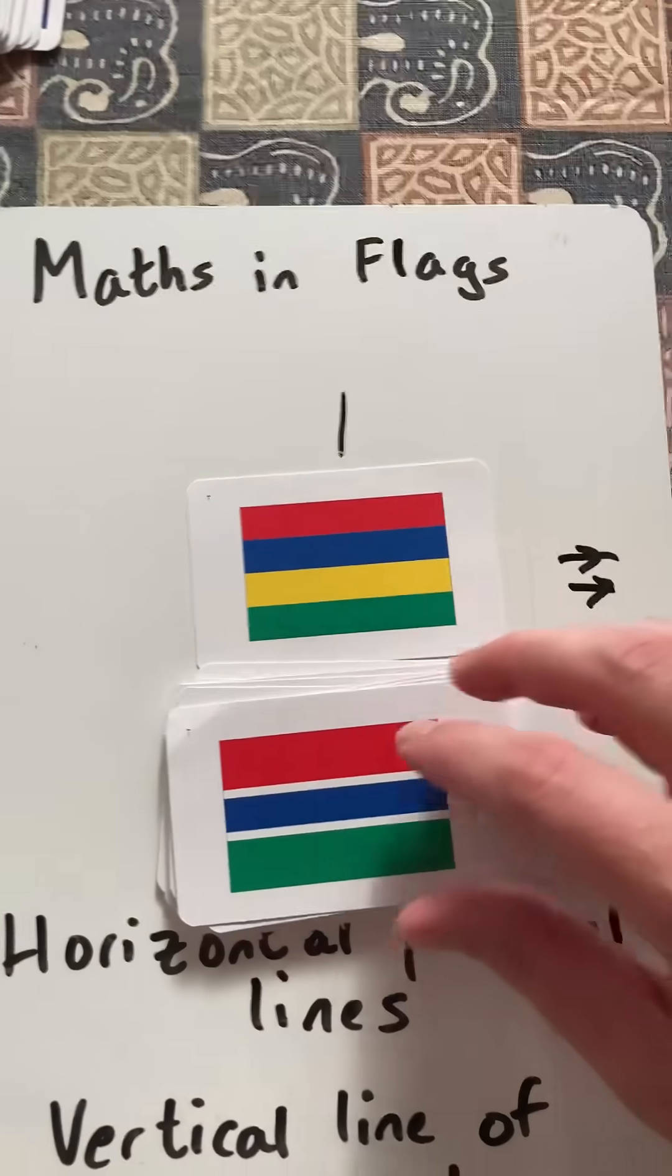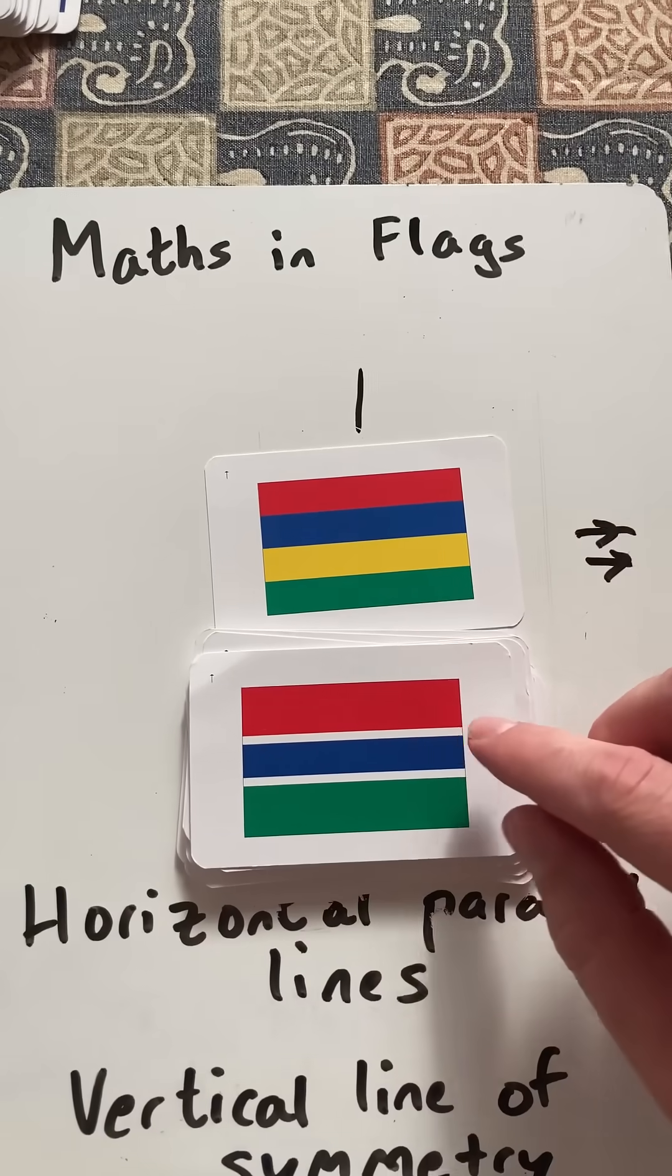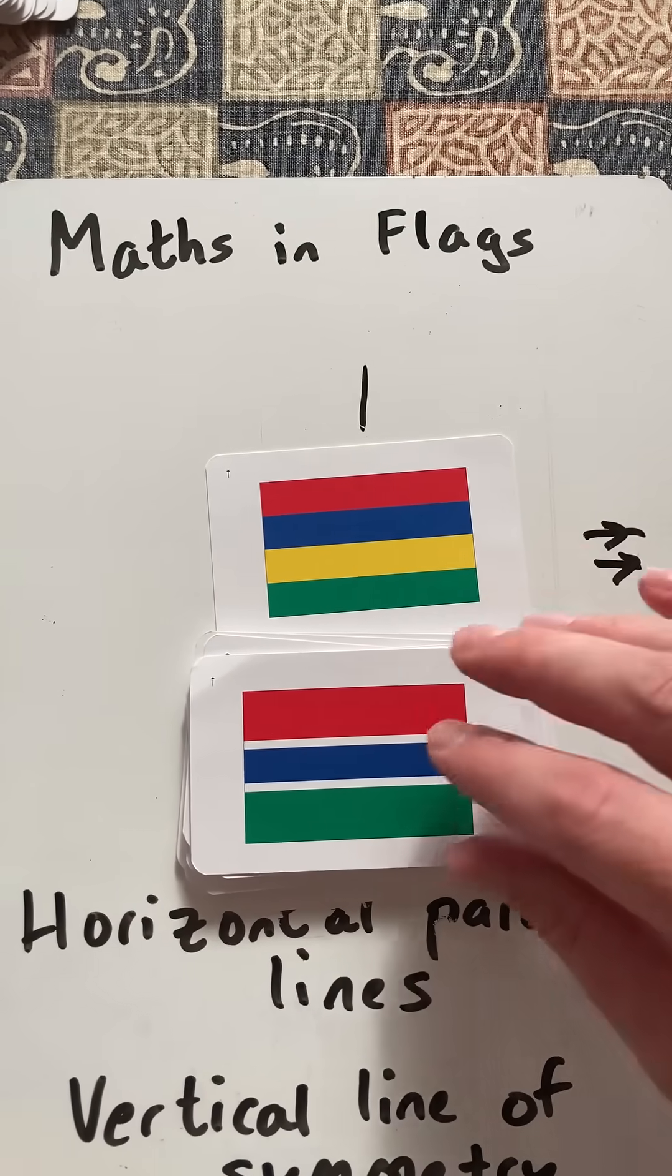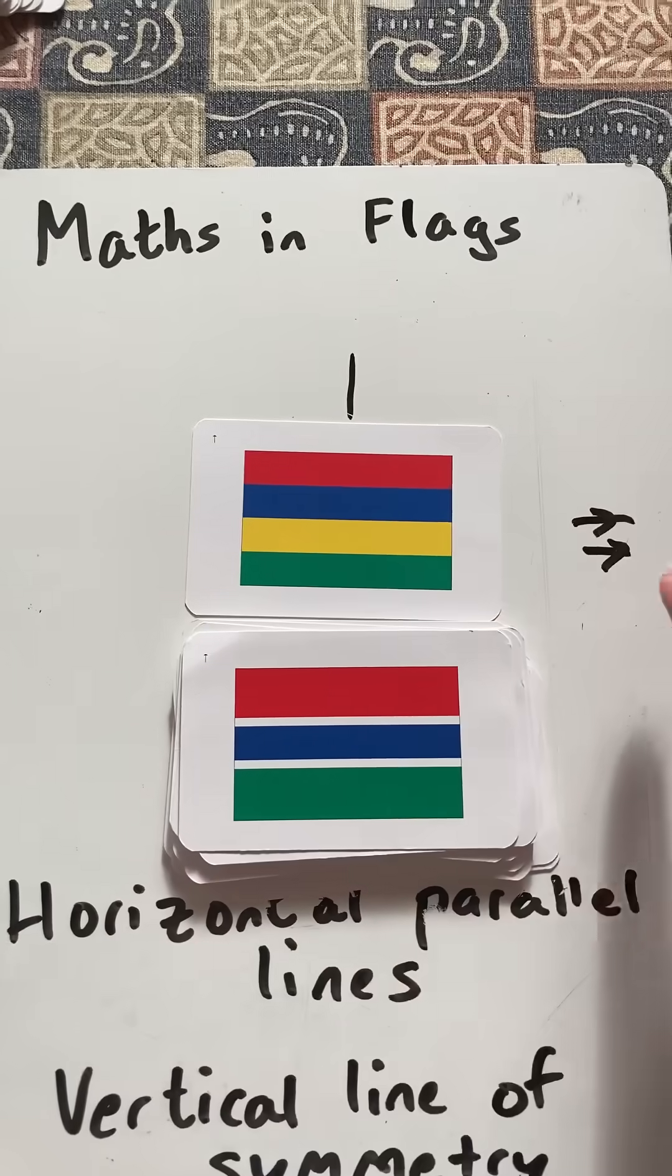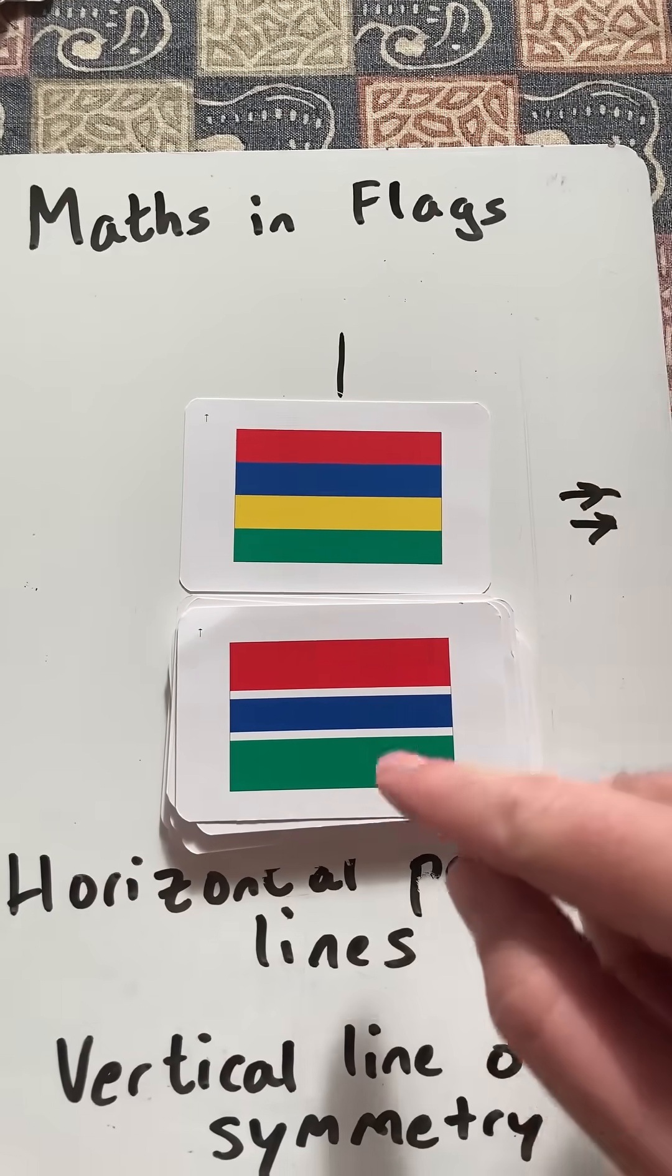So there we go. That's maths in flags, looking at flags that have three, and sometimes more, or even two, block sections with horizontal parallel lines and a vertical line of symmetry.